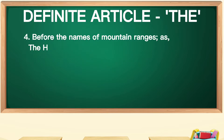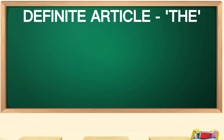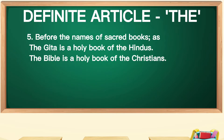The fourth point: the is used before the names of mountain ranges, because we are very particular and it is real. For example: 'The Himalayas are covered with snow.' 'The Alps cannot be easily climbed.' The fifth point: the is used before the names of sacred books, as in 'The Gita is a holy book of the Hindus.' 'The Bible is a holy book of the Christians.'